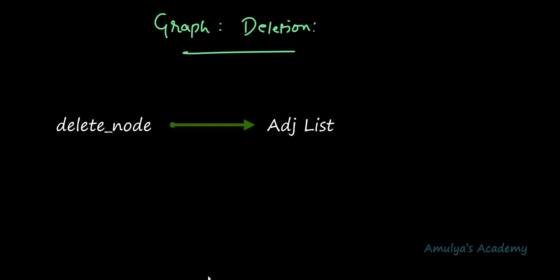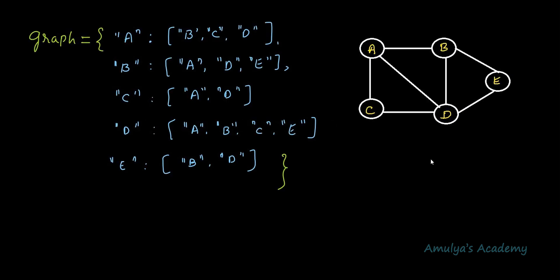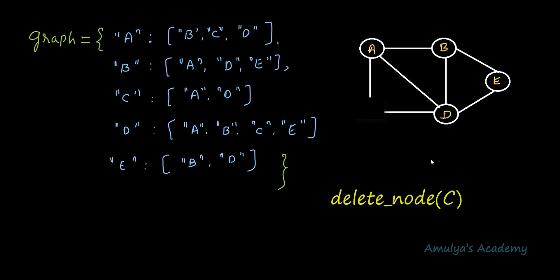Today we are writing a function to delete a given node from the graph using adjacency list representation. The delete node operation deletes the given node from the graph and also deletes the edges connected to that node. For example, if I want to delete node C, calling delete node on C will delete node C as well as its connected edges. Now, what changes do we need to make in the adjacency list representation?